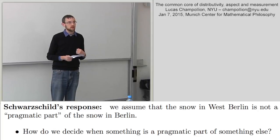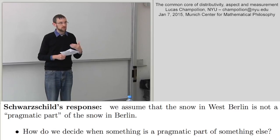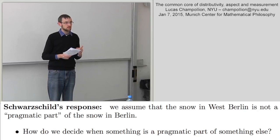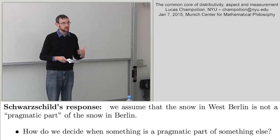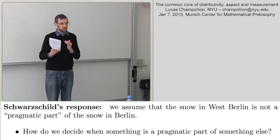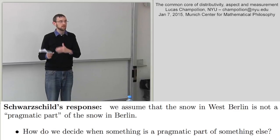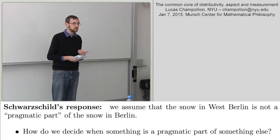What I'll try to do is motivate a change to the definition of monotonicity that takes care of this problem and subsumes Schwarzschild's original insight while handling the snow example. Rather than simply tinkering with monotonicity, I want to turn to another domain — aspect — develop a general notion there, and then carry it back to pseudo-partitives, thereby solving both puzzles at once.